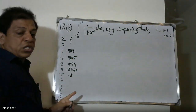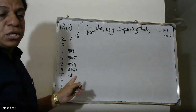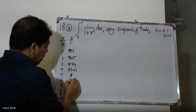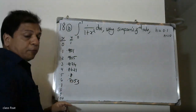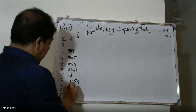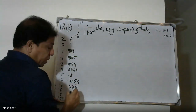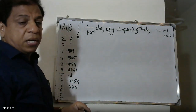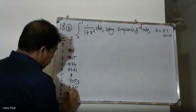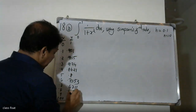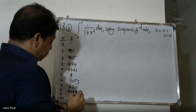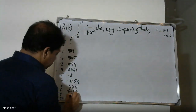When x=0.6, f(x) = 0.7353. When x=0.7, f(x) = 0.6711. When x=0.8, f(x) = 0.6090. When x=0.9, f(x) = 0.5525.